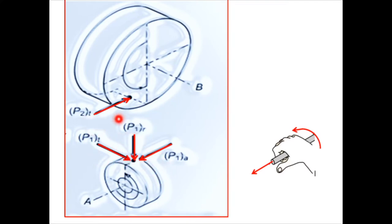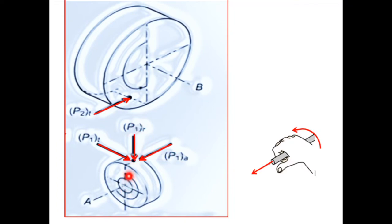Suffix 1 is used for the worm and suffix 2 is used for the worm wheel or worm gear. The radial force P1R acts towards the center. The axial component P1A is shown acting towards the left-hand side. How is this direction decided? For this purpose, the direction of rotation of the worm is important.